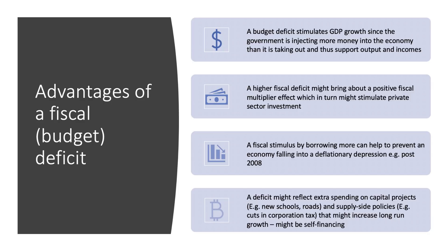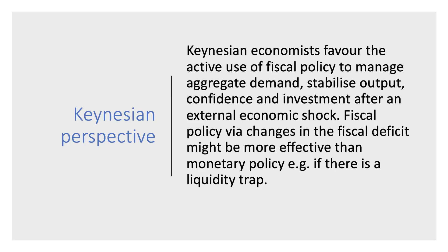The fourth advantage of a fiscal deficit is that it may reflect increased spending on capital projects — new schools, new hospitals, better roads — and also borrowing to fund supply-side policies such as a cut in corporation tax. All of these things might in theory increase long-run growth, and if the economy gets bigger it will generate more tax revenues, meaning a higher deficit could be partly self-financing.